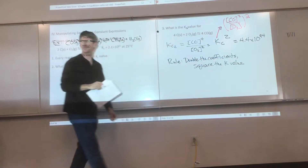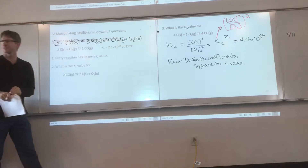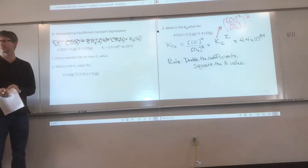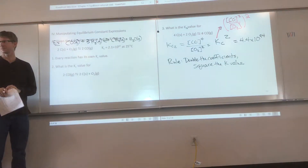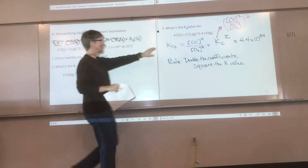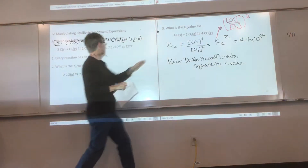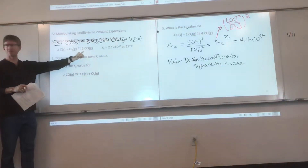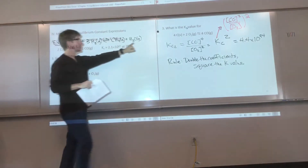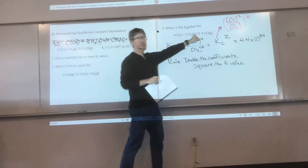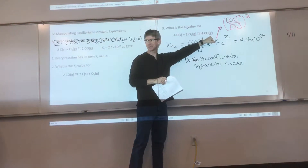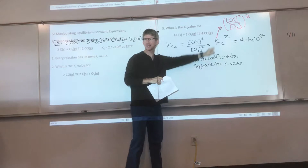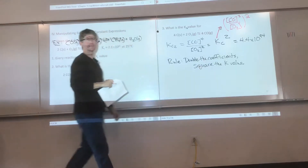Question from Mackenzie: so doubling the coefficient squares the K value—do you mean because everything in the equation has multiplied coefficients? Yes. Whereas we went from 2, 1, 2 to 4, 2, 4—yes, double the coefficients.